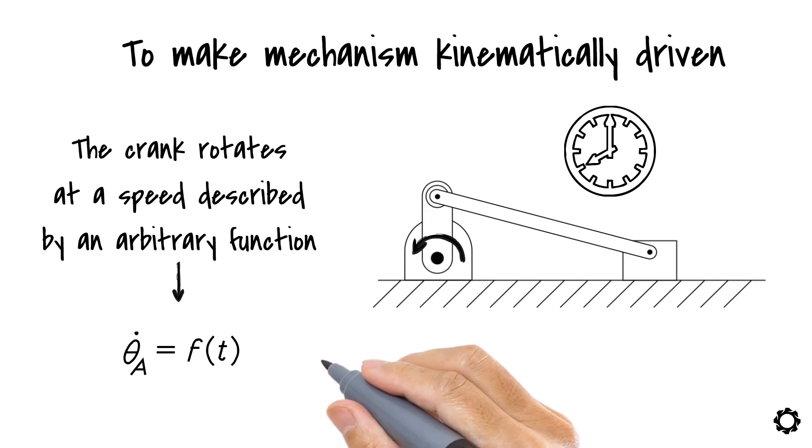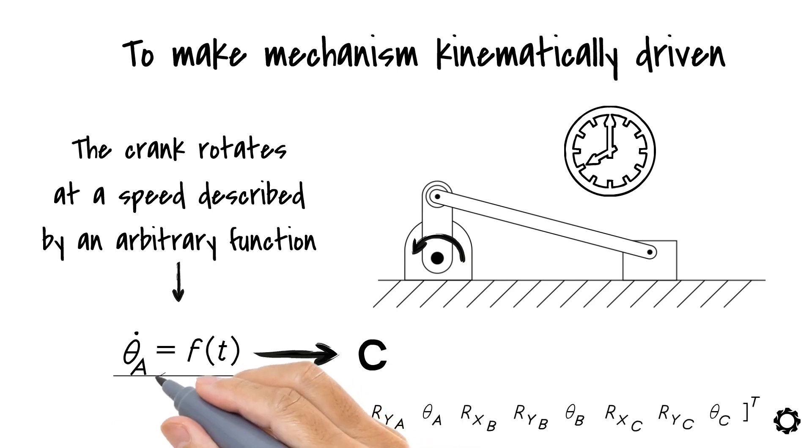This is fine until now, but if I wanted to include it in the vector of constraints, I have to find a way of writing this constraint in terms of the generalized coordinates. Currently, it is in terms of generalized velocity θ dot A.